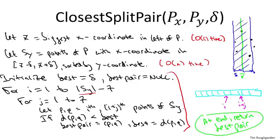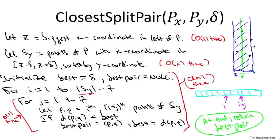As for the running time of this subroutine: we do constant work initializing variables. The array Sy has at most n points, so there are at most n iterations in the outer for loop. In the inner for loop, we only look at a constant number — seven — of other positions, and for each we do a constant amount of work. So for each of the linear number of outer iterations, we do constant work, giving a running time of O(n). As promised, analyzing the running time was not challenging, and our overall recursive algorithm will have running time O(n log n).